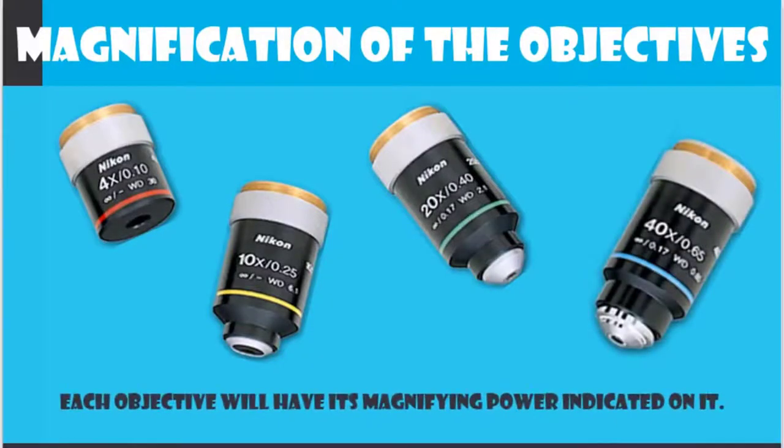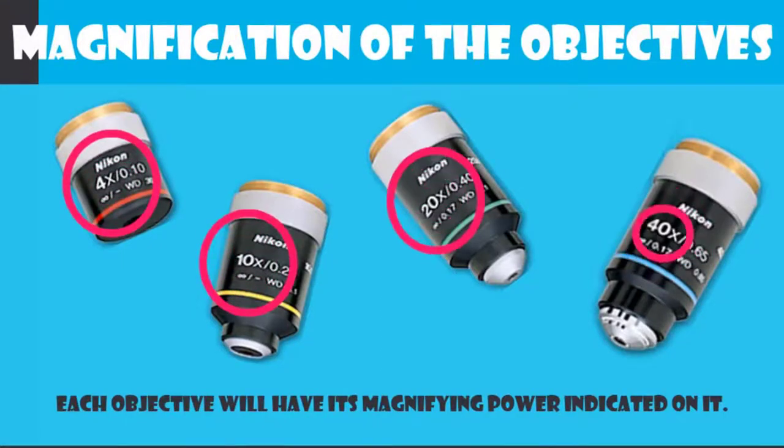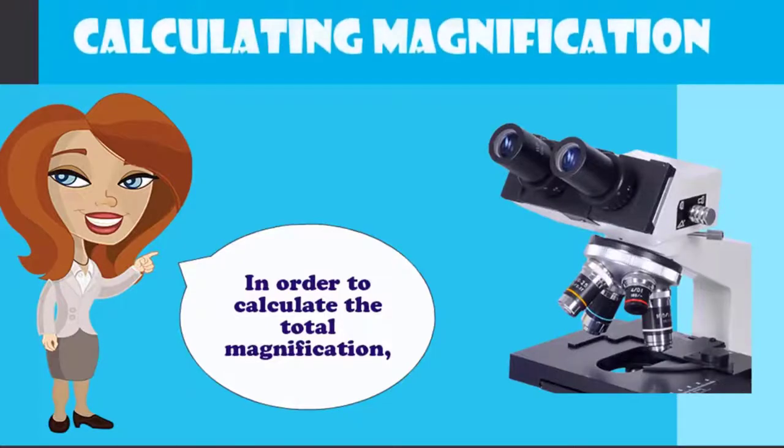In addition to the eyepieces, we must also consider the magnification of the objective used. To know the magnification of the objective, you will simply need to observe the magnification power that is indicated on it. For example, here is a 4x objective, a 10x, a 20x, and a 40x objective.